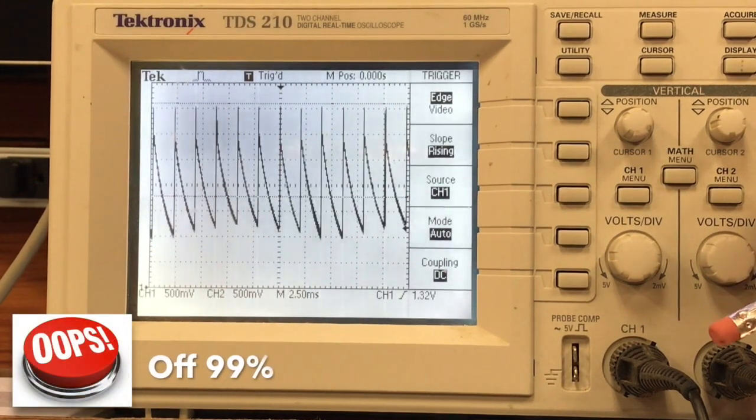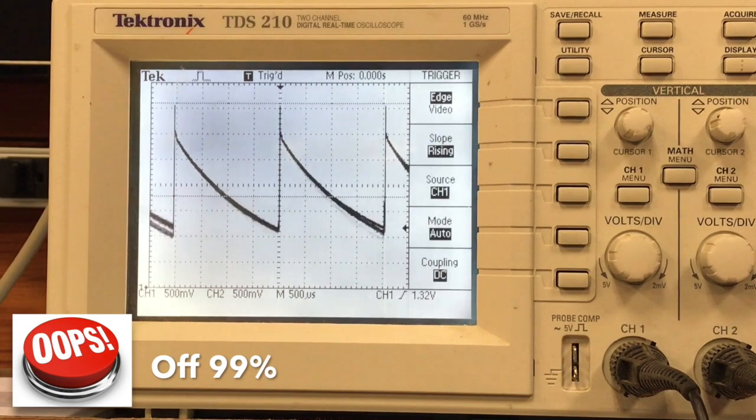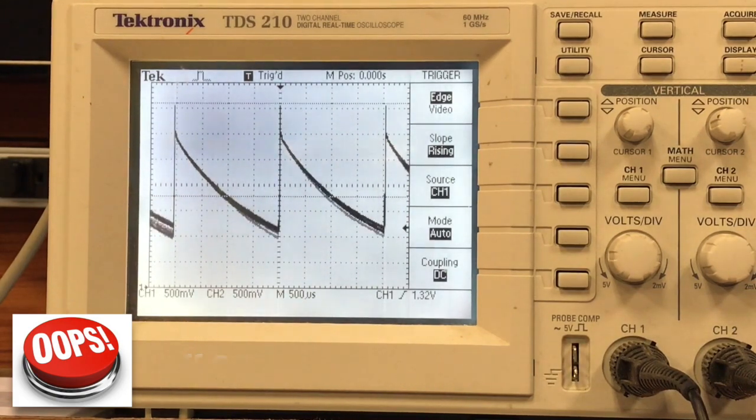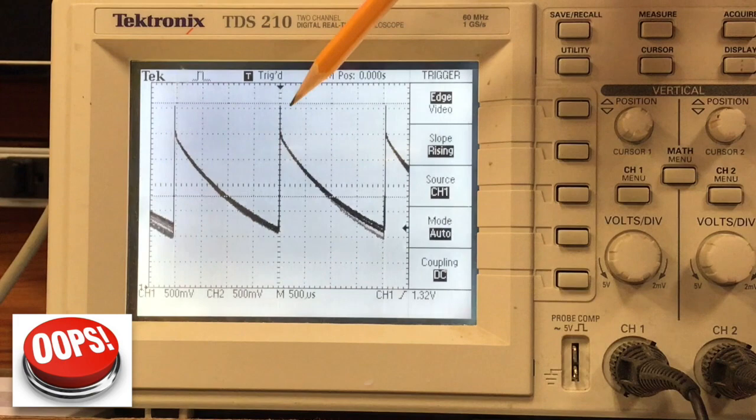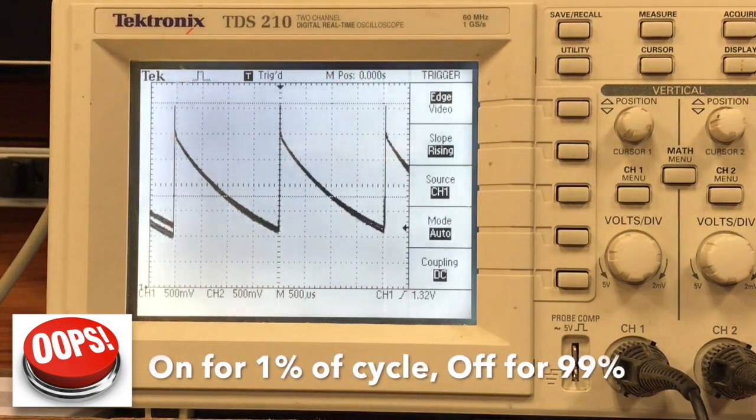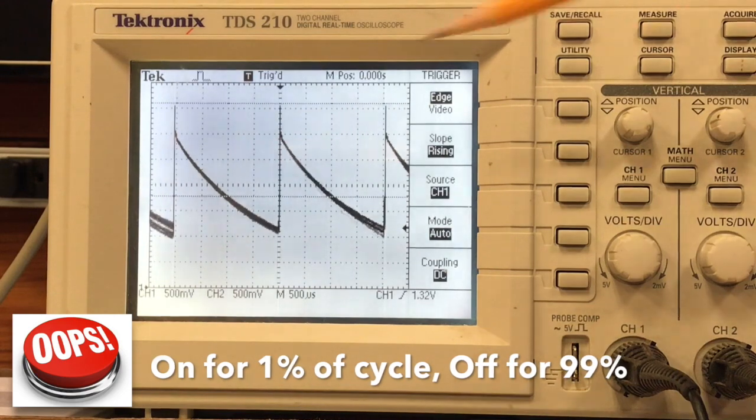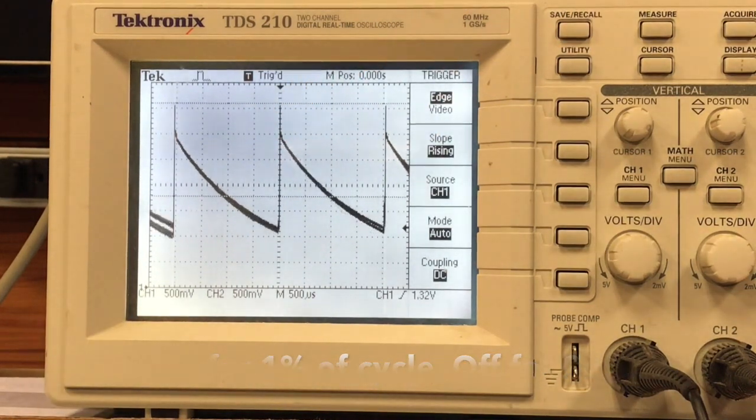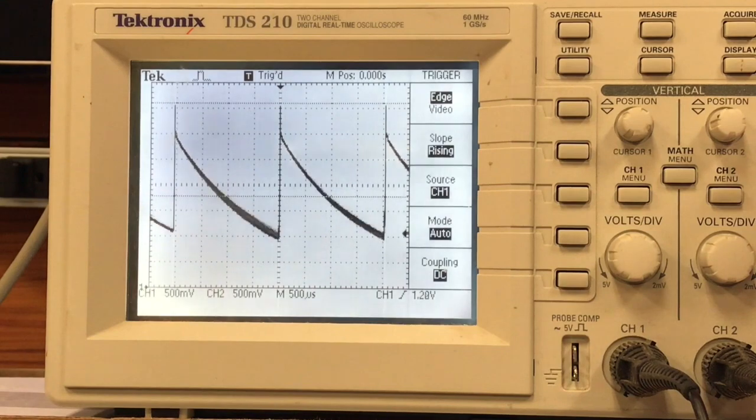Let's get that out a little farther so you can see it better. Here again, we're turned on for 1% of the time and we're turned off for 90% of the time. It takes a while for the voltage to decay so it isn't instantaneous.